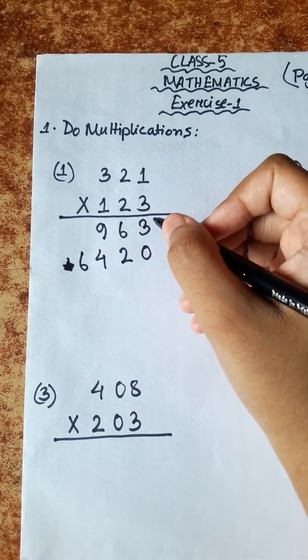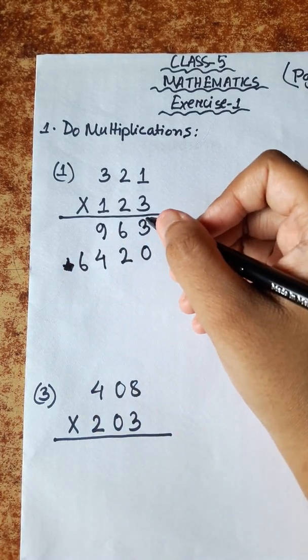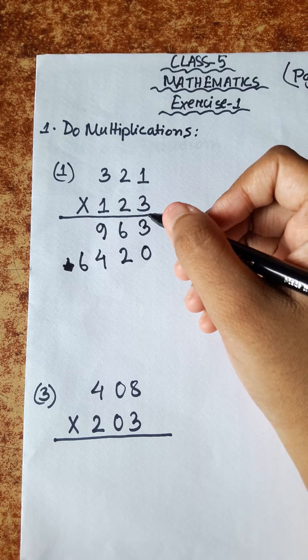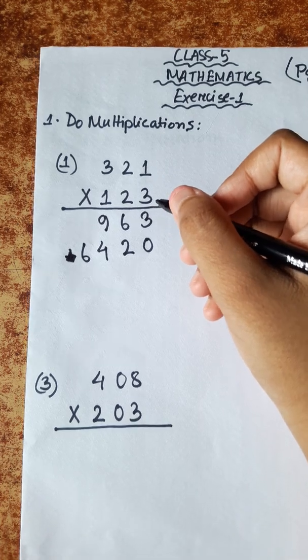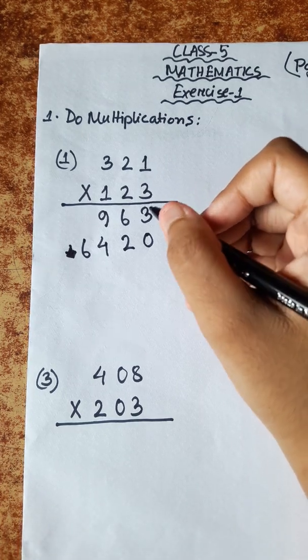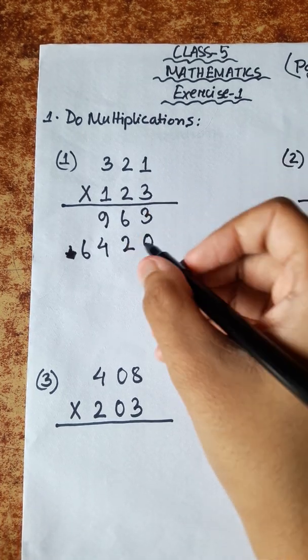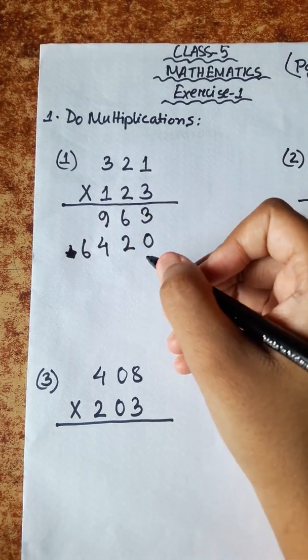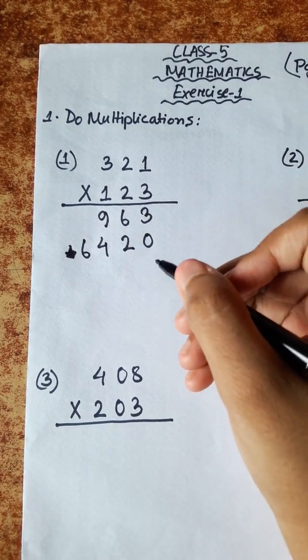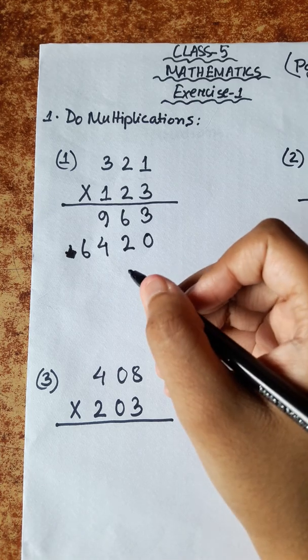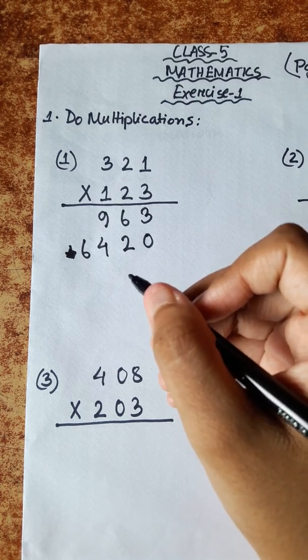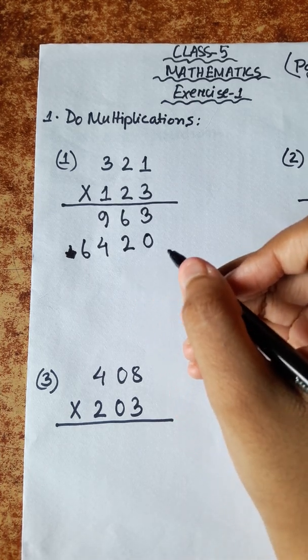This is the rule of normal multiplication. In the next problem, we have to learn the special system. Let's follow this.